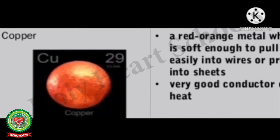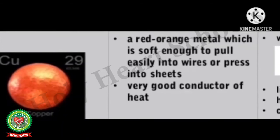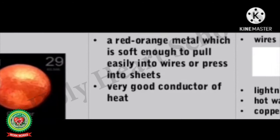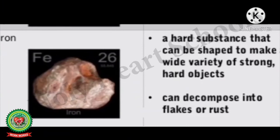Copper: Copper is a red-orange metal which is soft enough to be pulled easily into wires or pressed into sheets. It is a very good conductor of heat. Copper can be drawn into very thin wires and is also used in lightning conductors, hot water cylinders and copper-bottomed pans.